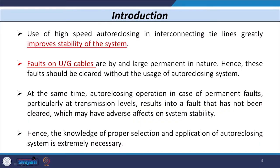The use of high-speed auto reclosing in tie lines — when a big tie line is connected between two areas — can definitely improve the stability of the system. One important point is that faults on underground cables are usually permanent in nature, so such faults do not need auto reclosing. We should use the auto reclosing system only for overhead conductors, not for underground cables.